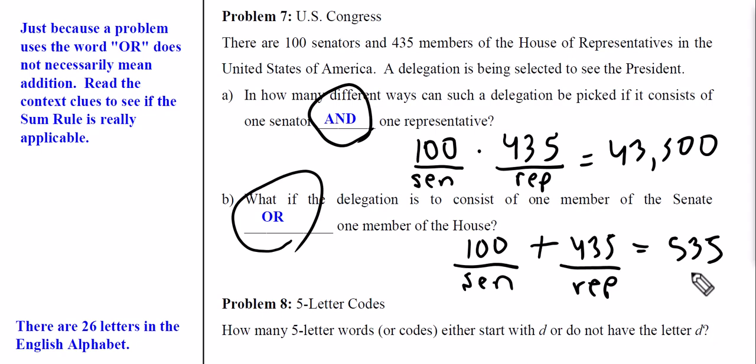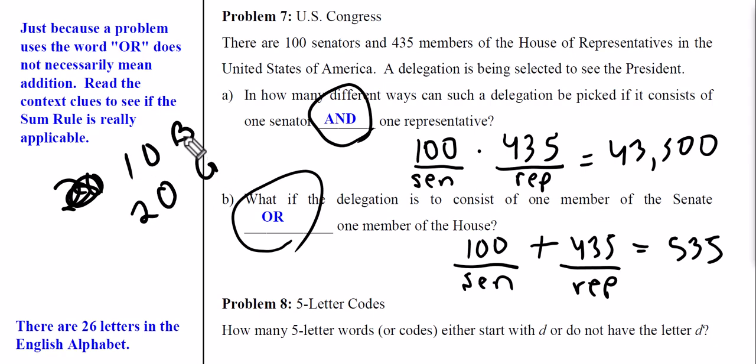Let's say there are 10 boys and 20 girls in the class — 30 students total. The front desk says 'send me either a boy or a girl.' Well, there are 10 boys and 20 girls, so you have 30 options. It's essentially asking you to just send any student. That's what 'or' is about — it's inclusive, meaning there's more to consider in your options.